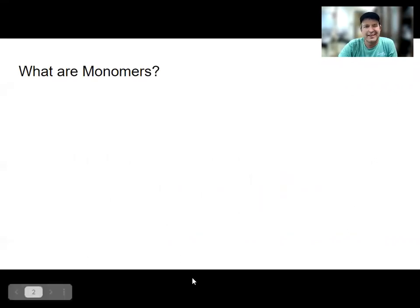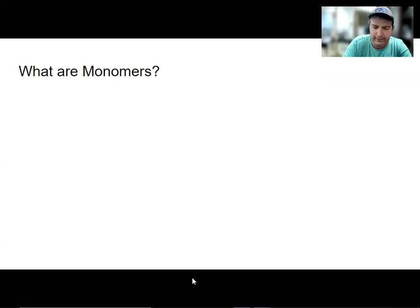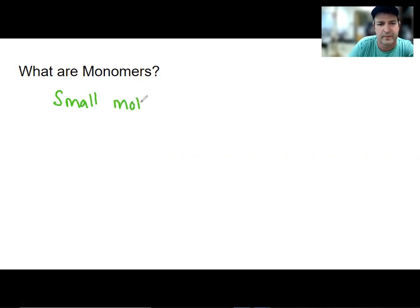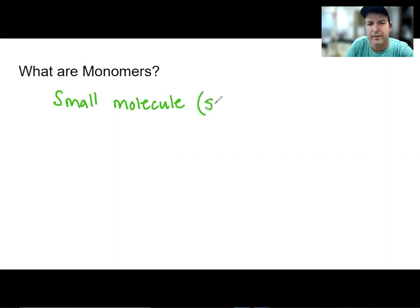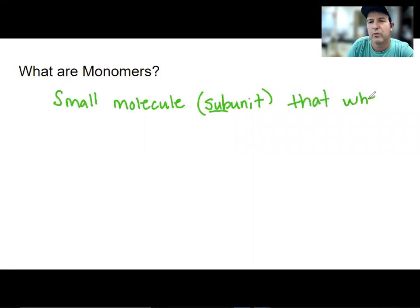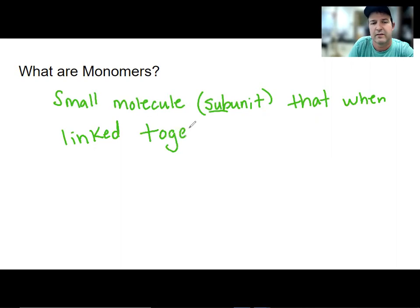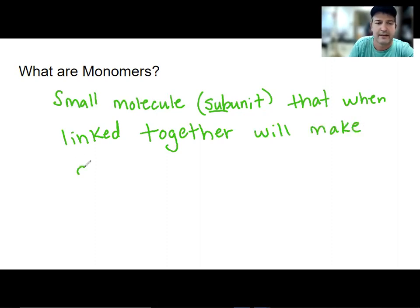So what are monomers? An easy way to think of a monomer would be a small molecule that is sometimes called a subunit. If we use the word subunit, they're usually talking about a monomer. Sub here meaning smaller, so it's a smaller unit. When linked together, they'll make a larger molecule.